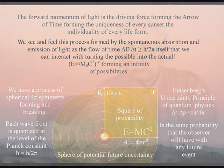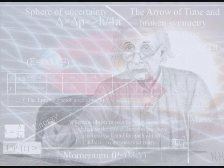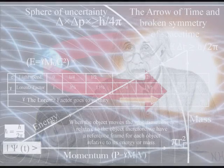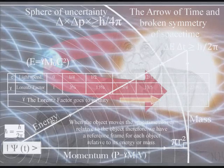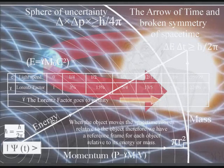This might sound far-fetched, but it is only extending Einstein's relativity to everyday objects and individuals. In the theory of general relativity, we have an interactive process. When an object moves, space-time moves relative to the energy and momentum of the object, therefore forming the curvature of space-time.